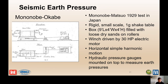The Mononobe-Okabe seismic earth pressure theory was developed from experiments performed by Mononobe that supported the theory of Okabe. The research was performed in Japan after the 1923 earthquake using a rigid, small-scale 1G shake table. The 9-foot-long by 4-foot-wide by 4-foot sandboxes containing relatively loose and dry sand were set on rollers, and a winch driven by a 30-horsepower electric motor provided horizontal simple harmonic motion. Hydraulic pressure gauges at the top of the sandboxes measured the resulting seismic earth pressures.